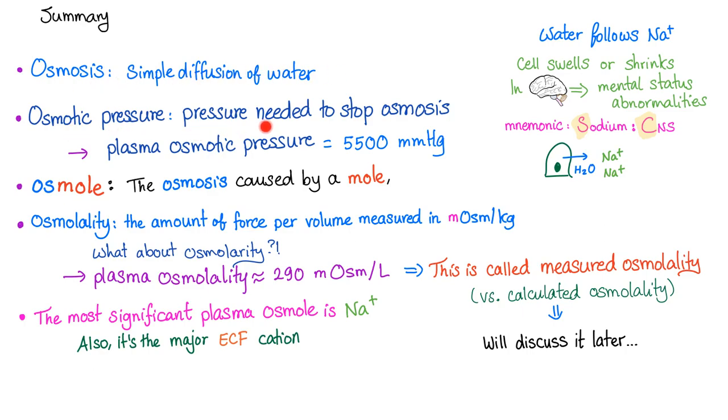So, let's summarize. Osmosis, simple diffusion of water, osmotic pressure, pressure needed to stop osmosis. The normal plasma osmotic pressure is around 5500. Osmol, osmosis caused by a mole. Osmolality, the amount of force per volume. Measured in milliosmoles per kilogram or milliosmoles per liter in cases of osmolarity, which we're gonna talk about in the next video. Plasma osmolality, 290, normally milliosmoles per liter, per volume, force per volume. This is called measured osmolality. Don't confuse this with calculated osmolality. The most significant plasma osmol is sodium. It's the major ECF cation. Water follows sodium. So, cell swells or cell shrinks. If it happens to be your brain, you get mental status abnormalities and the mnemonic is sodium problems, CNS problems.